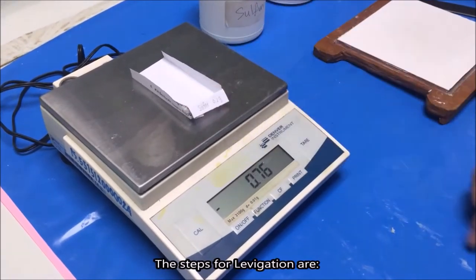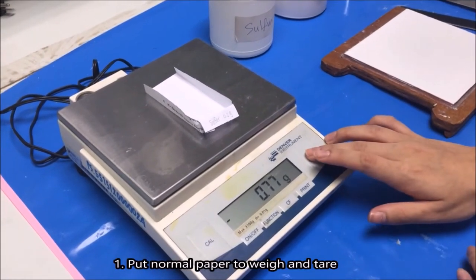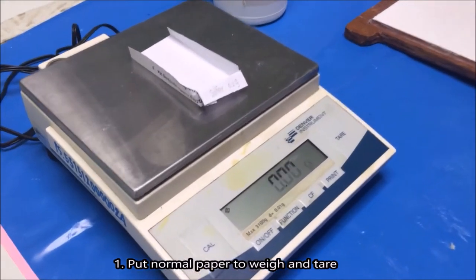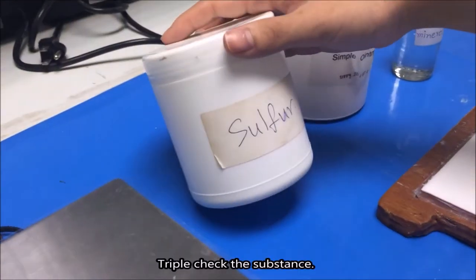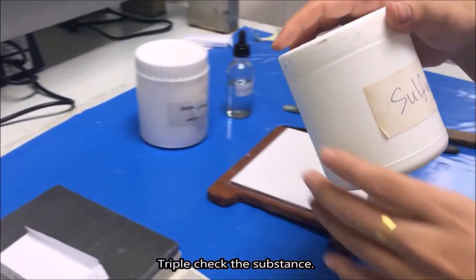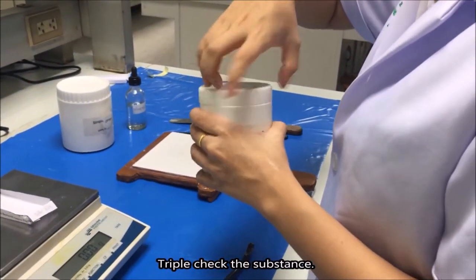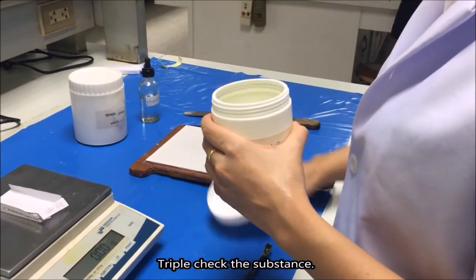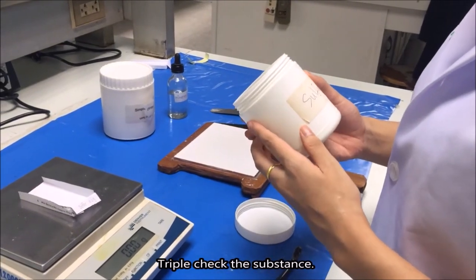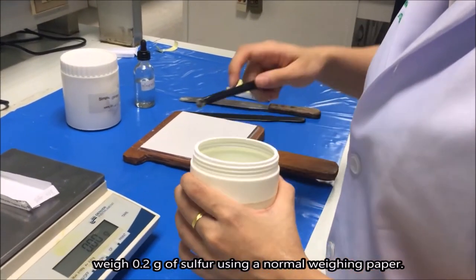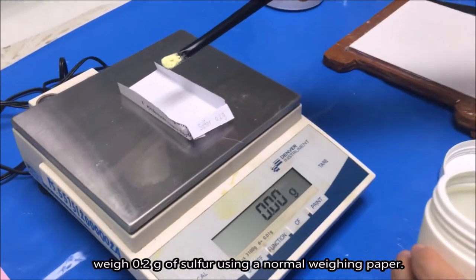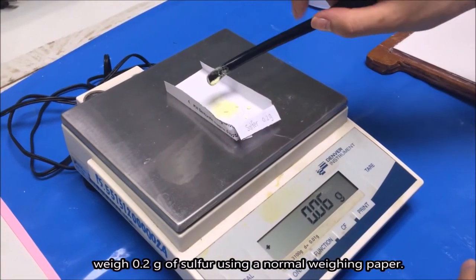The steps for lavigation are: Step 1 - Put normal paper to weigh and tare. Triple check the substance. Weigh 0.2 grams of sulfur using normal weighing paper.